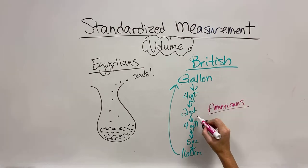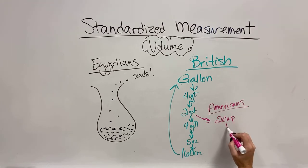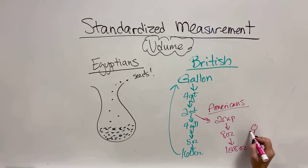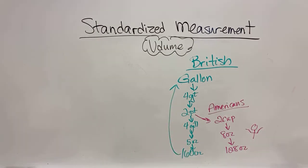Then the Americans said, you know what? Gills are weird. And so, we're going to say that the two pints are separated into two cups. There's eight ounces in each cup. And so, our American gallon is going to be 128 ounces. Because we said so.